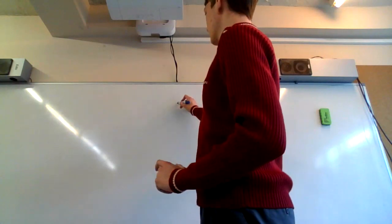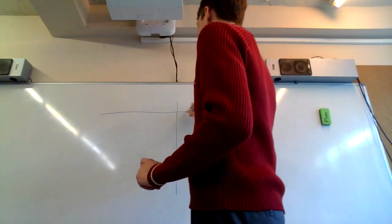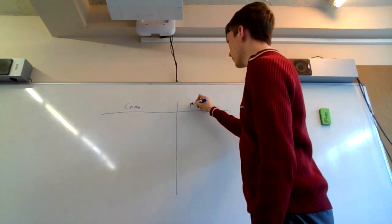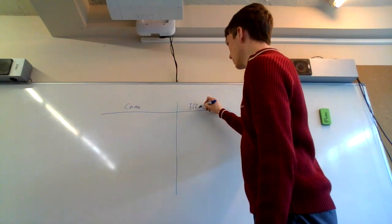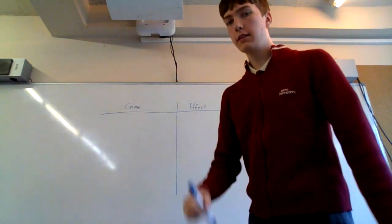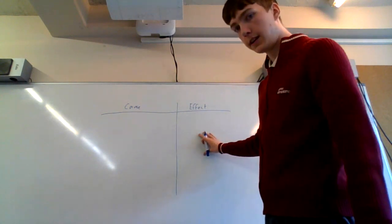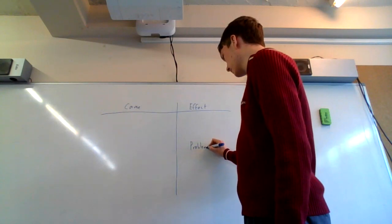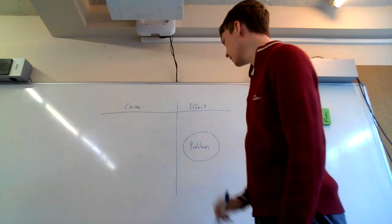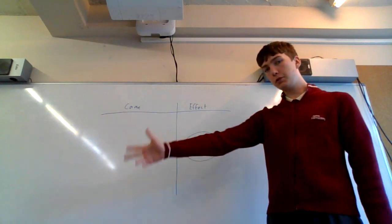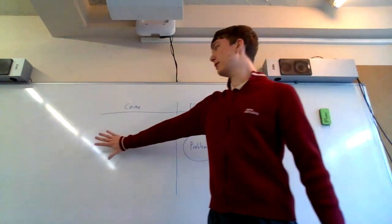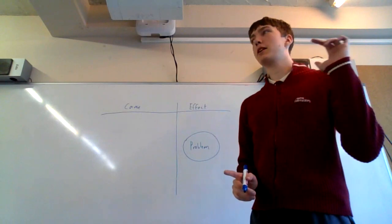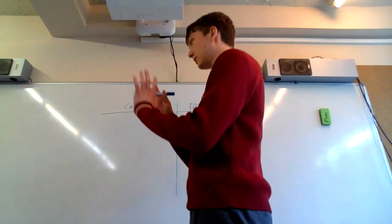To set up a fishbone diagram, on one side you put 'cause' and on the other side you put 'effect.' The effect is the problem — we put the problem in a circle on the right side. We call it a fishbone diagram because of its structure: there's a line that runs through it, and it looks like a fish bone when drawn out entirely.